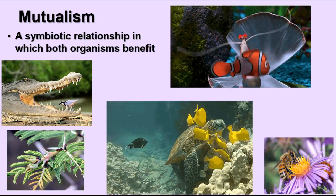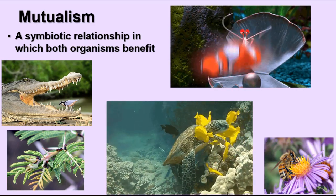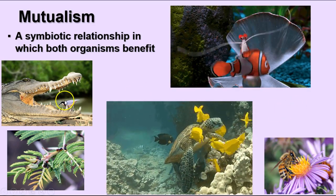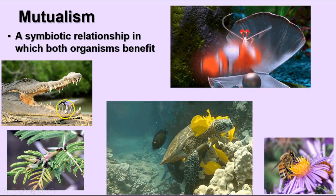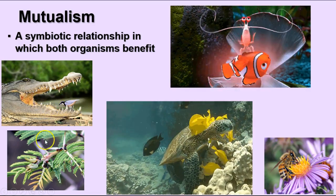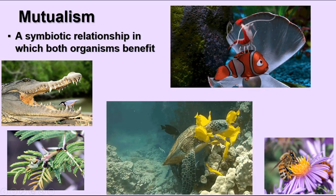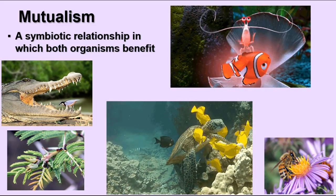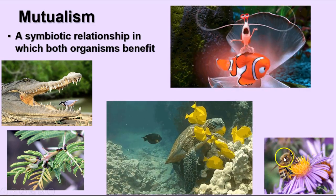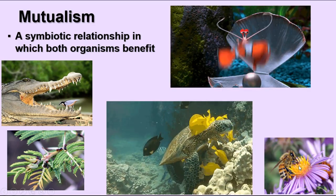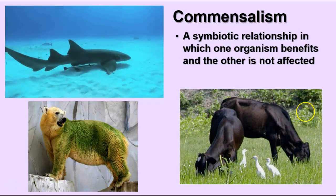In mutualism, both species benefit. Examples include the clownfish and anemone from Finding Nemo; a bird that picks the teeth of a crocodile — the crocodile gets its teeth cleaned and the bird gets food; ants that protect a tree while the tree provides food for the ants; and bees and flowers, where the bee gets nectar to make honey and also pollinates the flowers, contributing to genetic variety in the plant population.